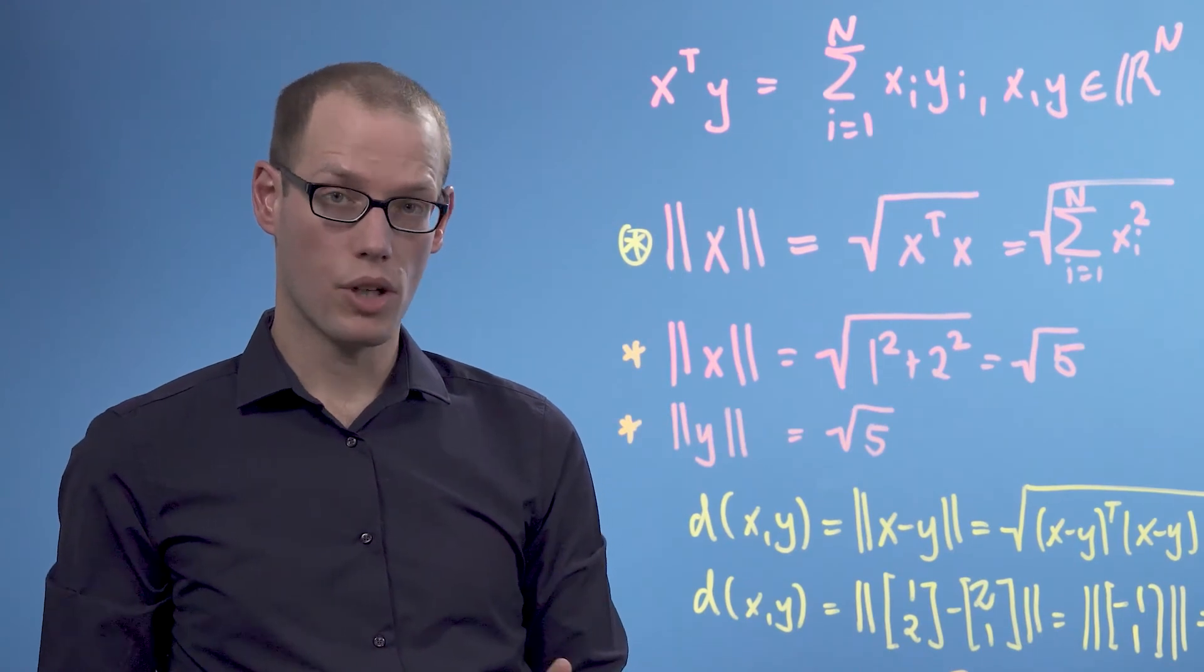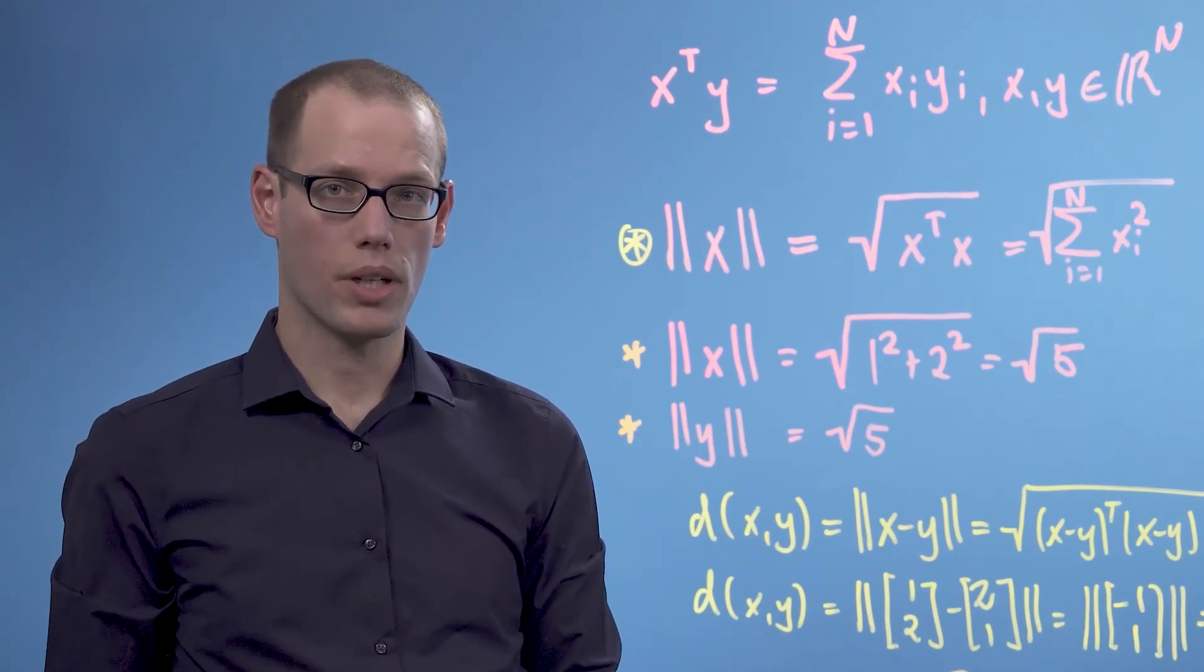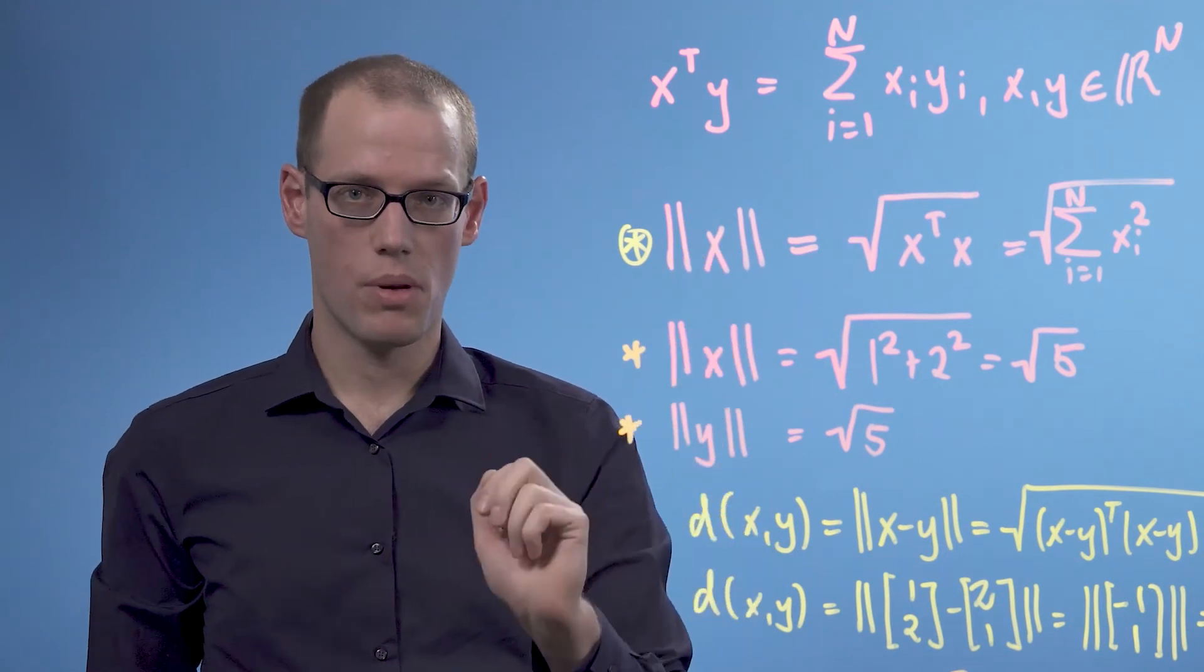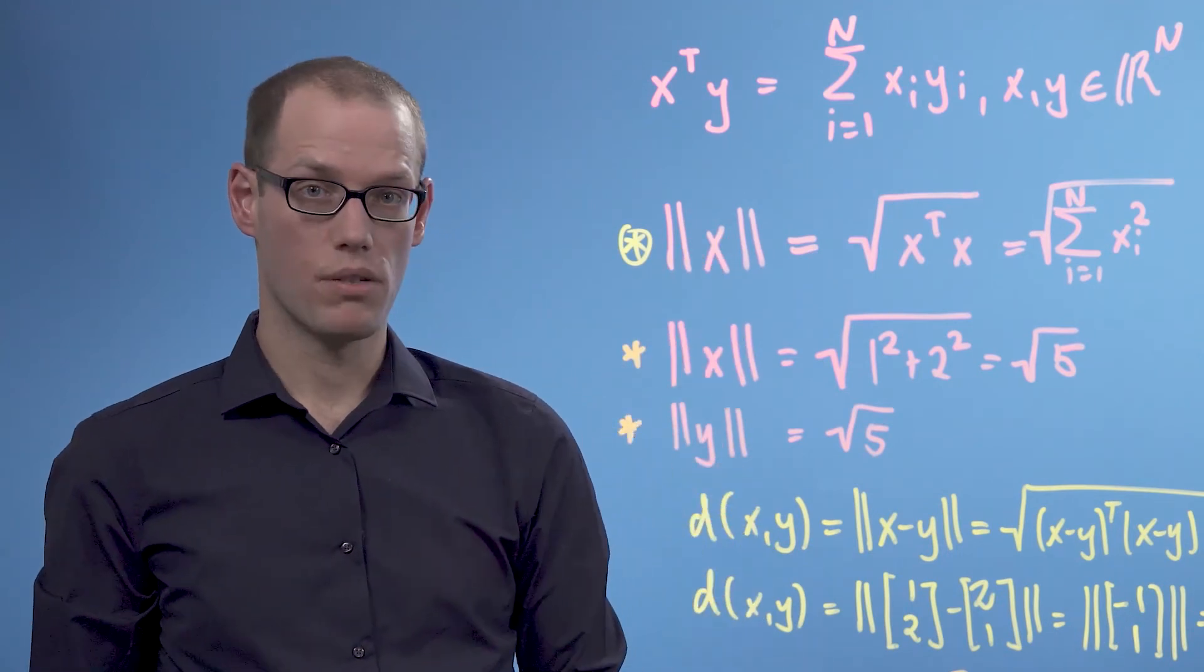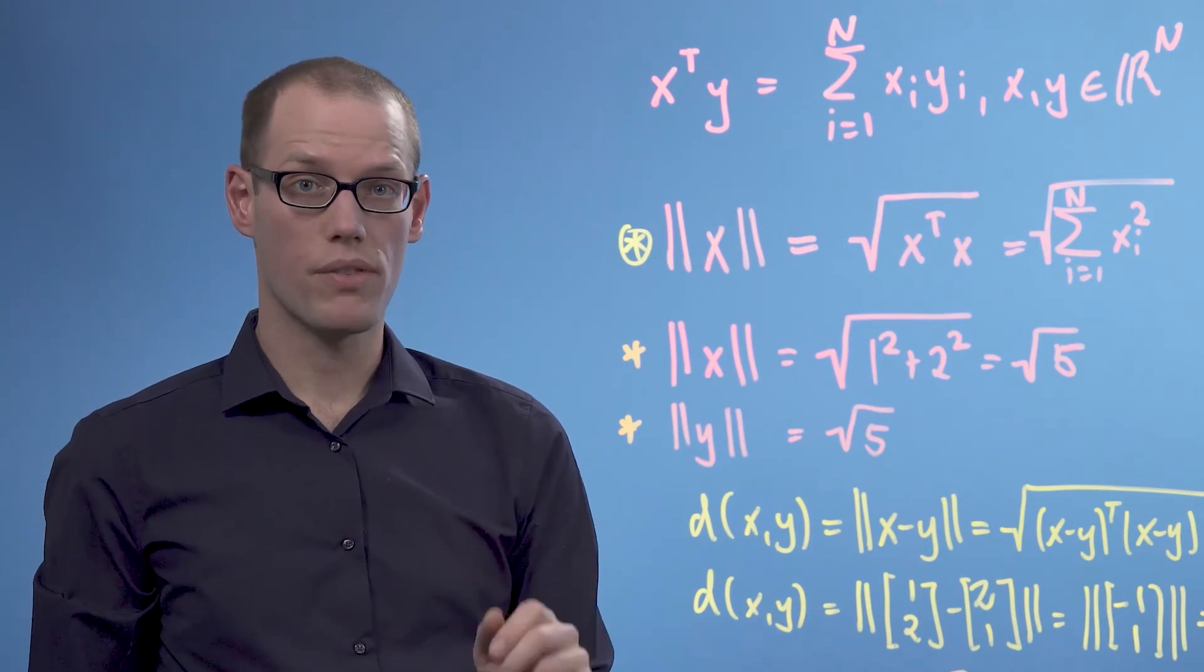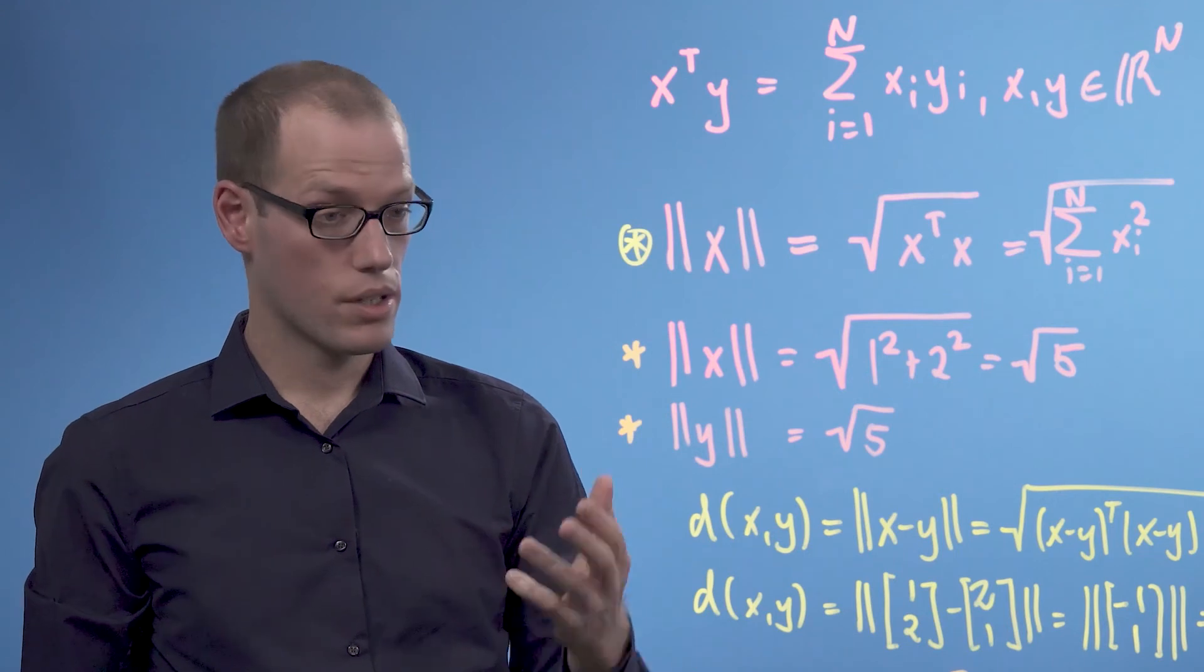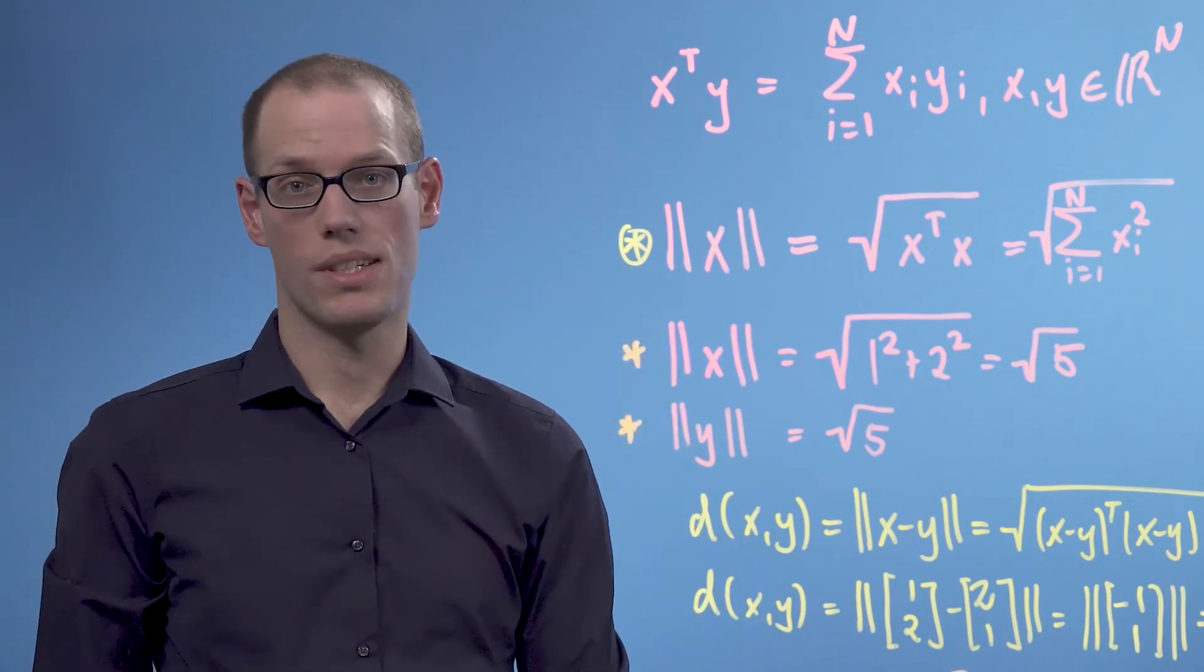In this video, we looked at dot products as special cases of inner products to compute lengths of vectors, to compute distances between vectors, and angles between two vectors. And in part 2 of this video, we will be looking at general inner products to compute exactly the same quantities.